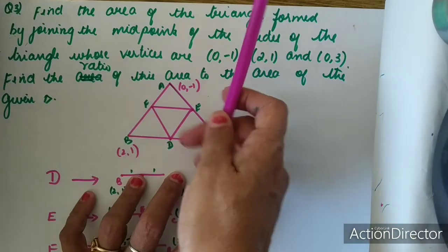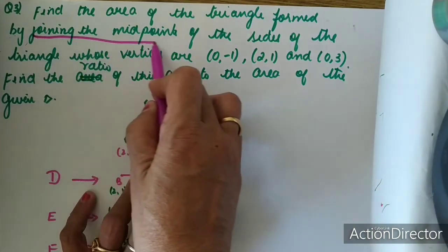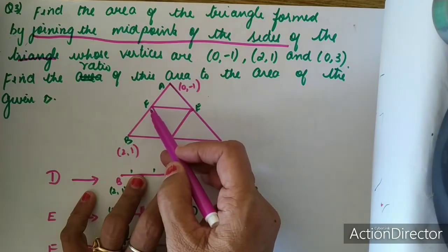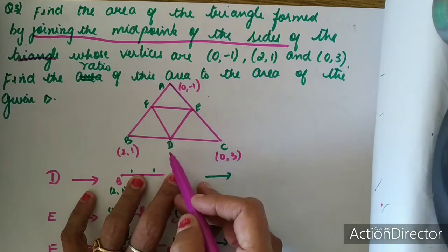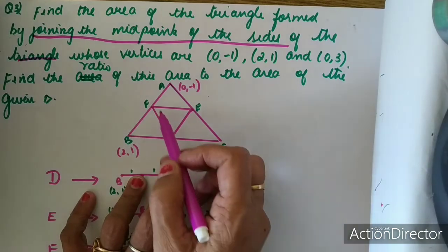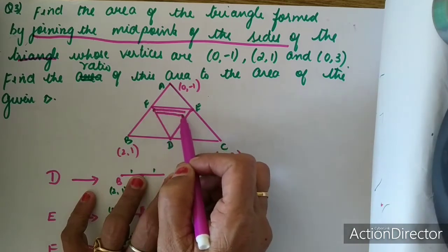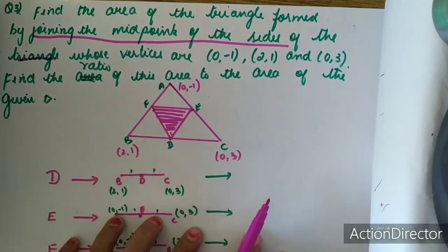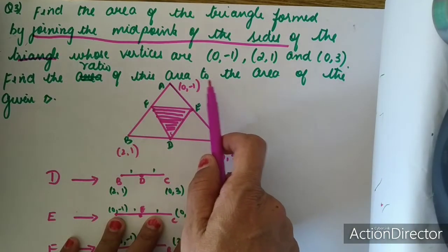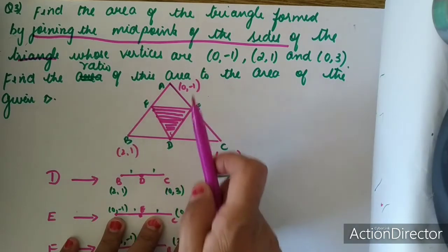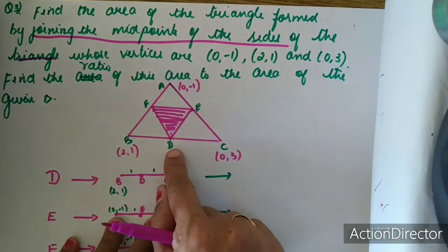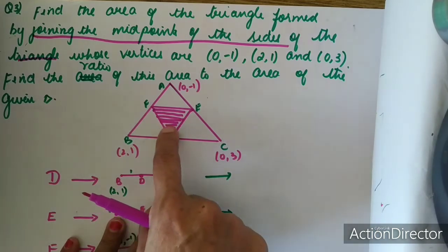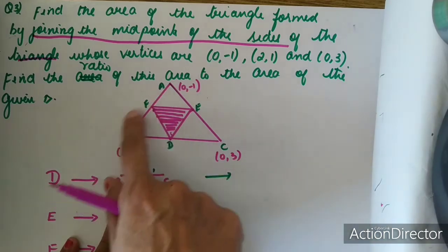Find the area of a triangle formed by joining the midpoints of the sides of the triangle. This is triangle ABC given over here. F is the midpoint of AB, E is the midpoint of AC, and D is the midpoint of BC. First they are asking you to find the area of triangle DEF formed by joining the midpoints of the sides. Also they are saying find the ratio of the area of this triangle to the original triangle. So first we have to find the coordinates of the midpoints.